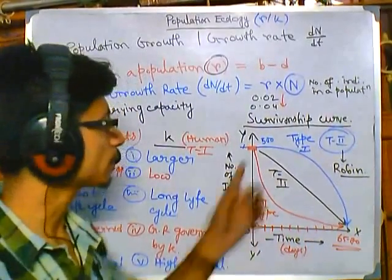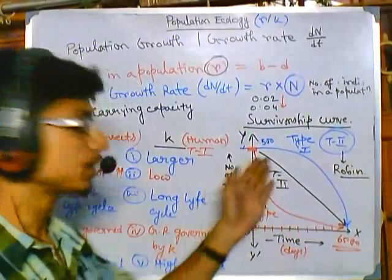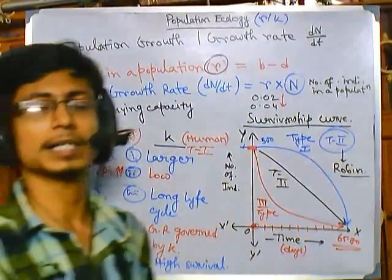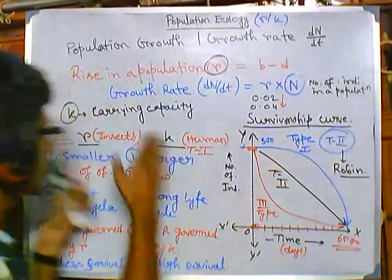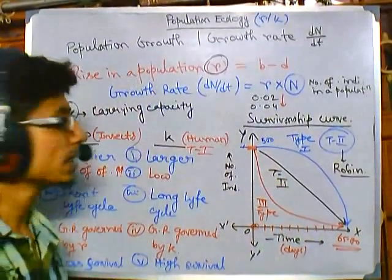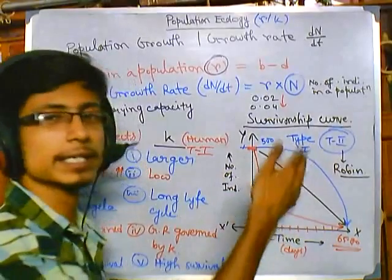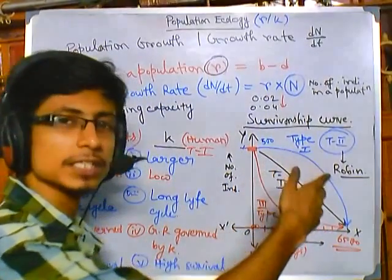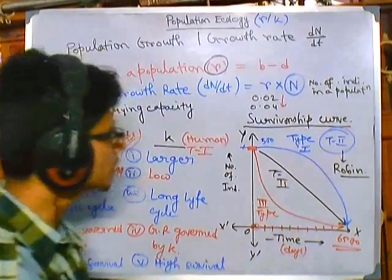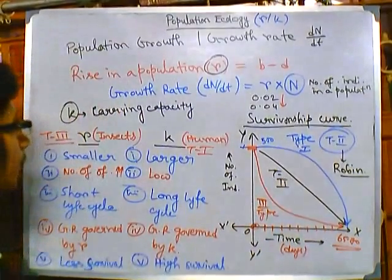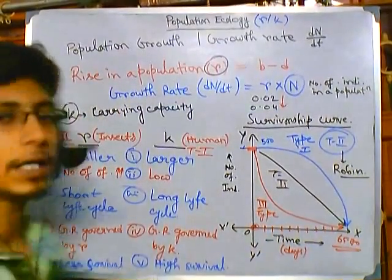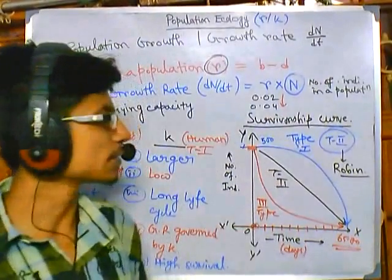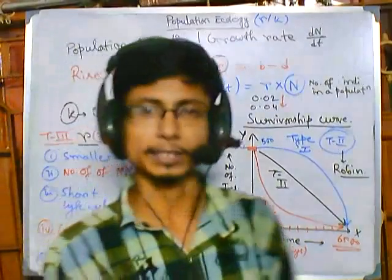These are all the survivorship curves. By analyzing these curves we can identify all the important properties of R and K selected species — particularly how parental care changes the shape of the graph. Understanding survivorship curves is essential, and I hope this video has helped you understand both R and K selected species as well as the survivorship curve. Thank you.